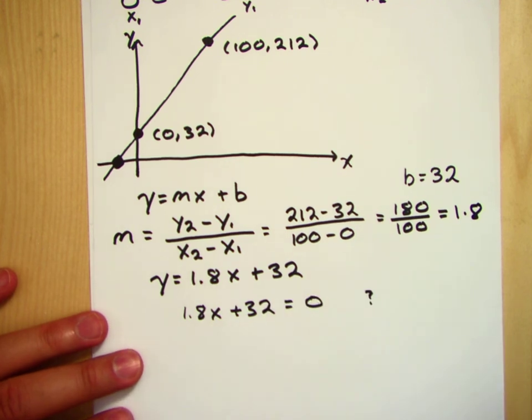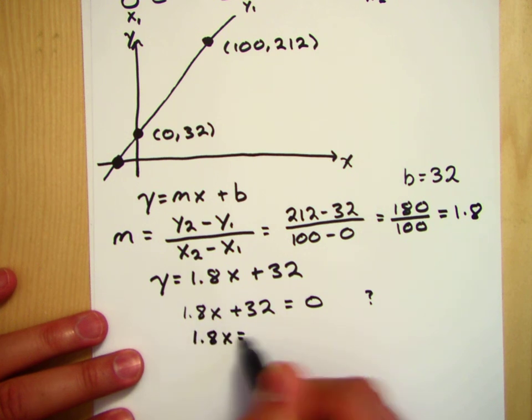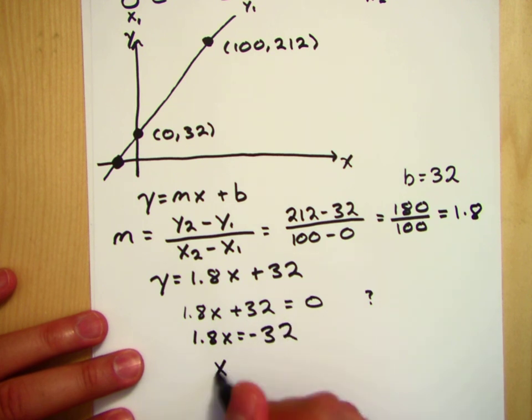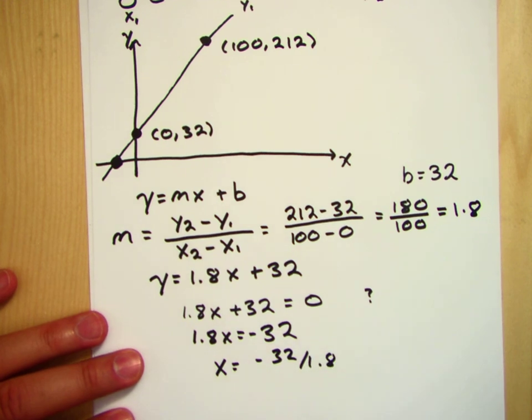Well, let's solve. We get, if we subtract 32 from both sides, we get 1.8x is equal to minus 32, and then x is equal to minus 32 over 1.8. And what is that? I don't know that off the top of my head.